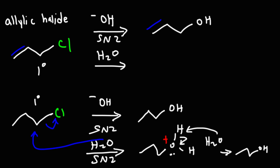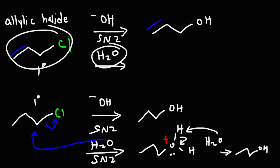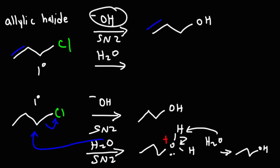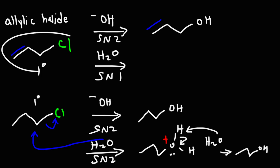What about reacting the allylic halide with water? Hydroxide is a strong nucleophile, so it reacts quickly with the allylic halide — that's when we get the SN2 reaction. Water is a bit slower and less nucleophilic since it's neutral. Hydroxide is a much better nucleophile than water, so because water is slower, it gives the substrate time to ionize, and we get the SN1 reaction.